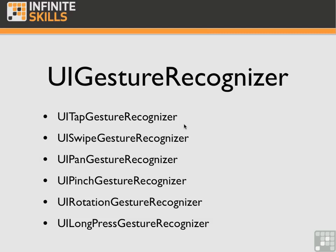The UIPinchGestureRecognizer looks for pinching gestures involving two touches. When the user moves two fingers toward each other — a pinch close — the conventional meaning is zoom out. When the user moves two fingers away from each other — an un-pinch or pinch open — the conventional meaning is zoom in. Pinching is a continuous gesture. It begins with UIGestureRecognizerStateBegan when the two touches have moved enough to be considered a pinch, and the gesture recognizer sends its action message at the next run loop cycle. It changes with UIGestureRecognizerStateChanged when a finger moves with both fingers still on the screen, and ends with UIGestureRecognizerStateEnded when both fingers are lifted from the view.